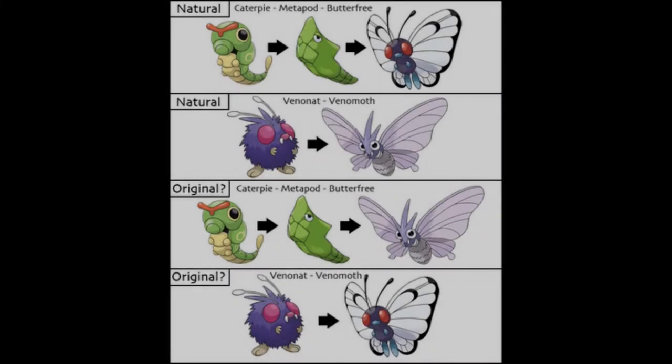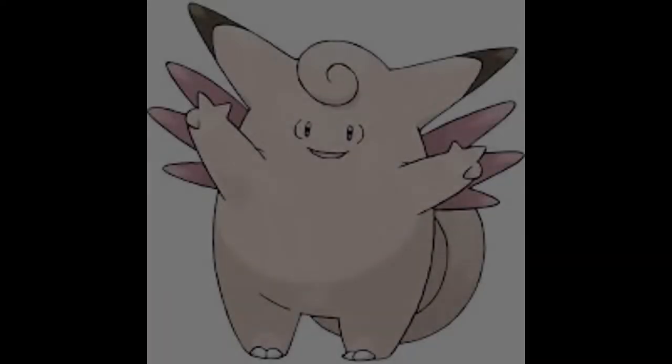Butterfree and Venomoth have their evolutionary lines swapped. Caterpie evolves into Metapod, then Butterfree. A post on the Poké Conspiracy website shows similarities between Venomoth and Butterfree, and Caterpie, Metapod and Venonat. The theory is that in the first game, editors somehow switched the sprites for Venomoth and Butterfree by accident, later discovered the error after release, and decided to leave it rather than fix it.